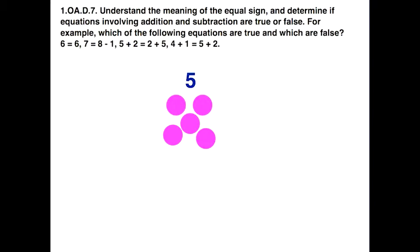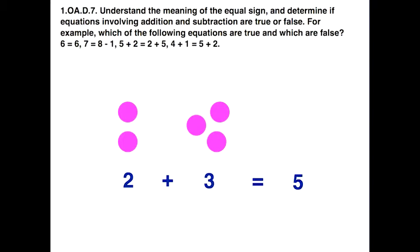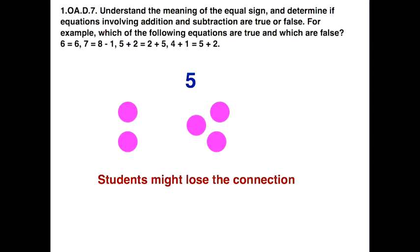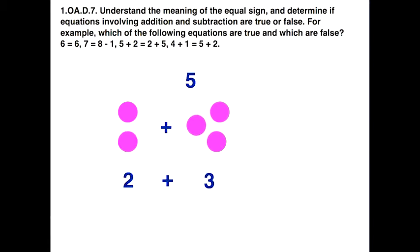Let's say we start off with something like 5 physical objects. We can regroup them. Then symbolically we put that representation as 2 plus 3, which connects back to our original quantity of 5. We finish out the abstract representation with the equation 2 plus 3 equals 5.